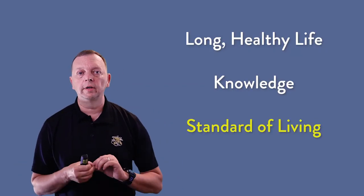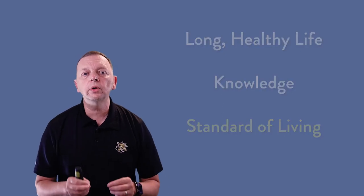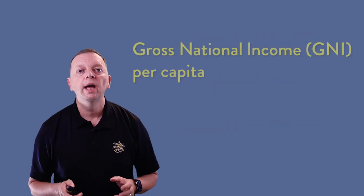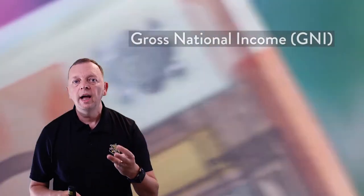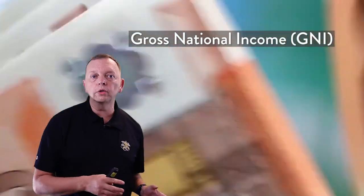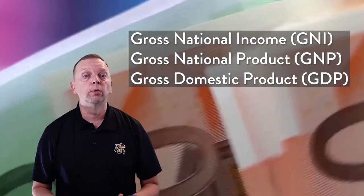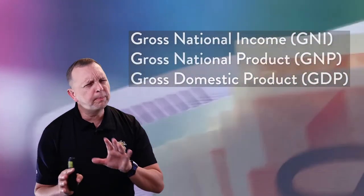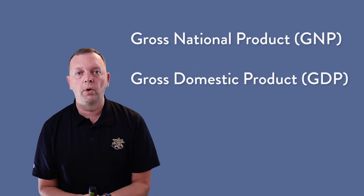The last dimension that makes up the HDI is a decent standard of living. To measure this dimension, the United Nations looks at something known as the gross national income per capita. The gross national income is one of three ways that the amount of money a country earns can be calculated — the other two are gross national product and gross domestic product. Let's look at GDP and GNP first.